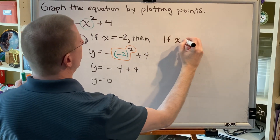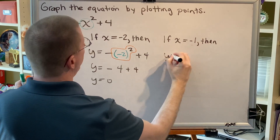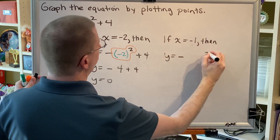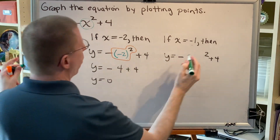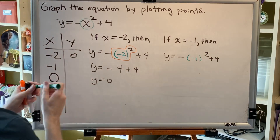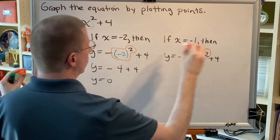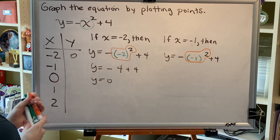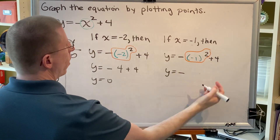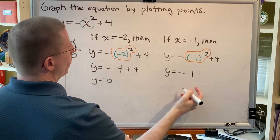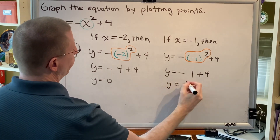If x equals negative 1, then y equals negative (negative 1) squared plus 4. Again, we follow order of operations. We get y equals negative — negative 1 squared is 1, and when that 1 gets multiplied by the negative it becomes negative 1, and negative 1 plus 4 is 3.